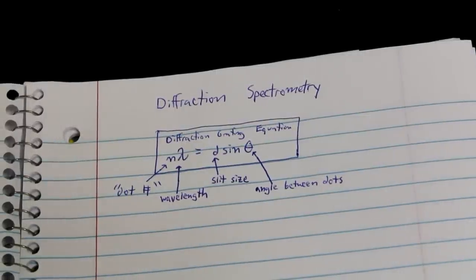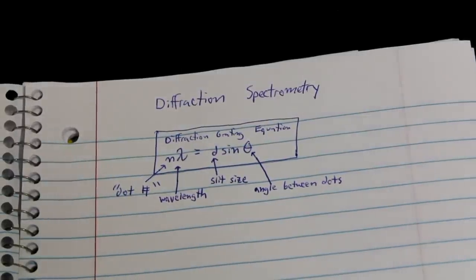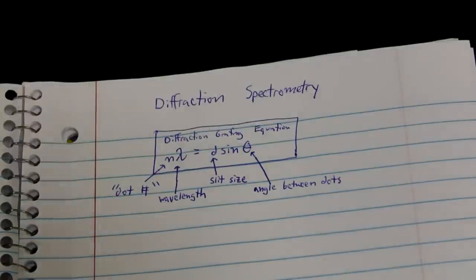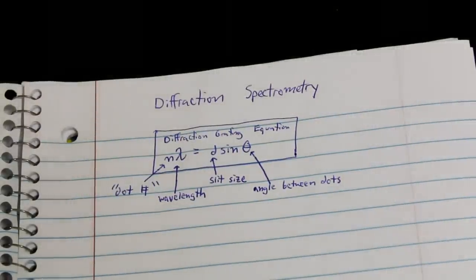Now these properties are governed by the diffraction grating equation, which states that n lambda equals d sine theta. Now don't let this math scare you, it's actually really easy to use. In fact I'm going to show you how to use it.